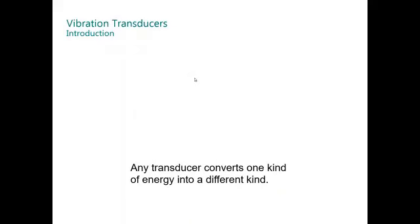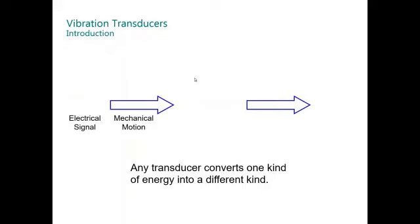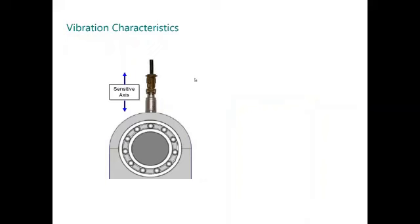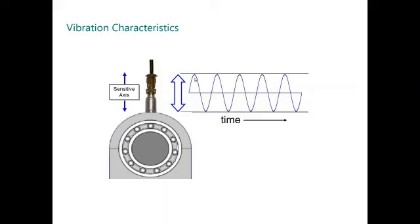Any transducer converts one kind of energy into another different kind. The mechanical motion, the vibration, is converted into electrical signals using different vibration transducers. The mechanical movement could be measured in displacement, velocity, and acceleration. In this case, the accelerometer converts the mechanical vibration into an electrical signal that is proportional to the vibration.